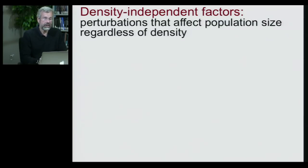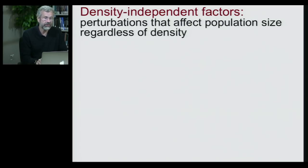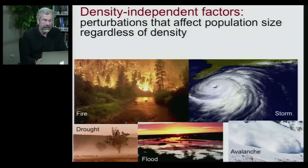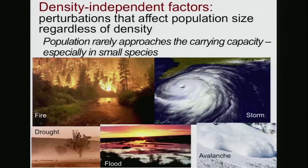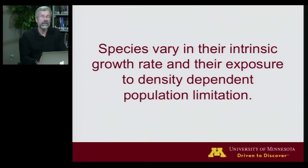We may have these density-dependent factors affecting our populations, but there's one other factor to know about before we move on: population growth can also be influenced by what are called density-independent factors. These are ecological disasters or catastrophes — fires, storms, droughts, avalanches — that affect population size regardless of its density. There are cases where populations may rarely approach the carrying capacity. This is most common in very small species. Small animals can't escape a fire, whereas a deer can stand in water; large animals can withstand floods while small animals drown. So density-independent factors are more important for small species. Species vary in their intrinsic growth rate and their exposure to density-dependent population limitation.